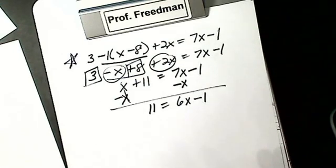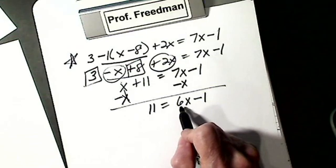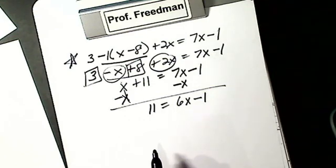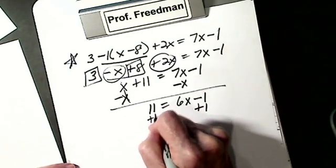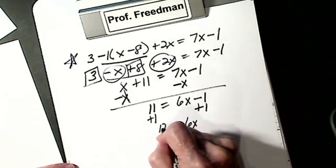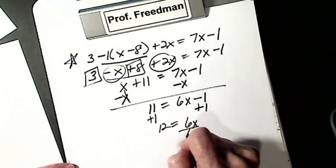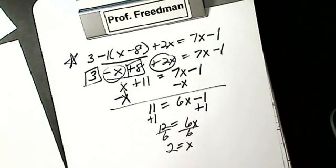Always think: you want all X's on one side — they are. I want X alone — it's not alone. I have to get rid of the 6 and negative 1. I'm not going to divide, it puts a fraction in. You've got to get rid of the 1. So I get 6X equals 12. Divide by 6, X is going to be 2.